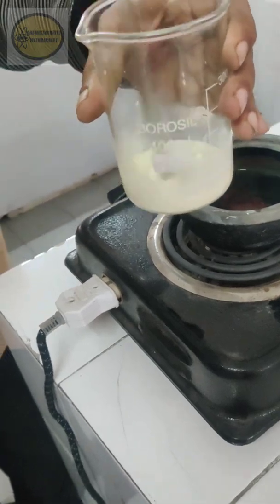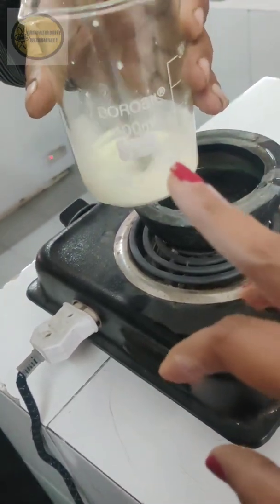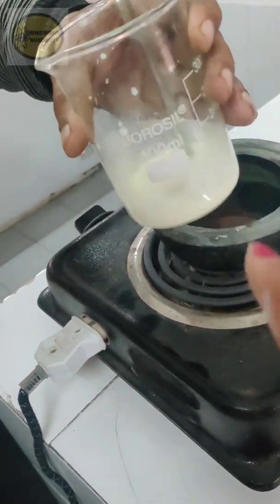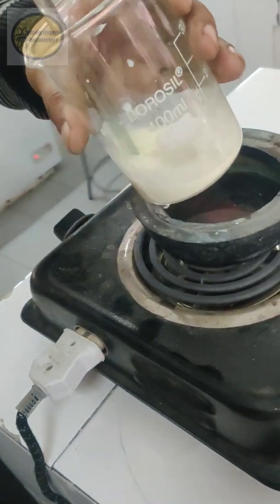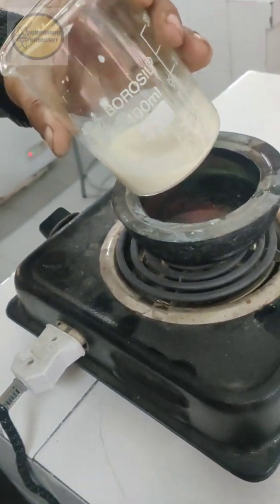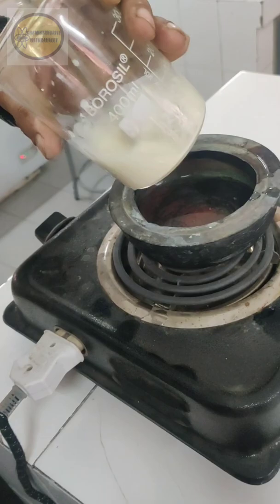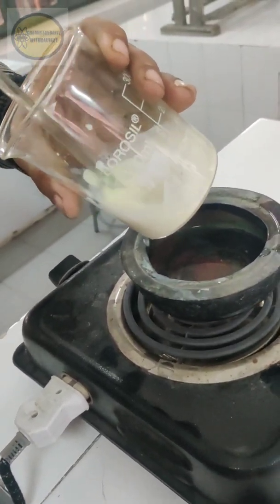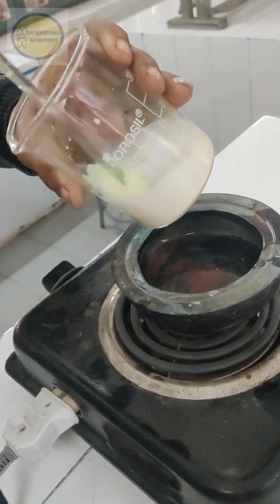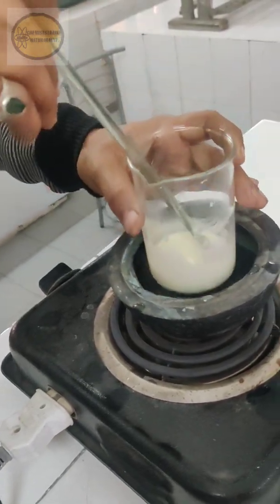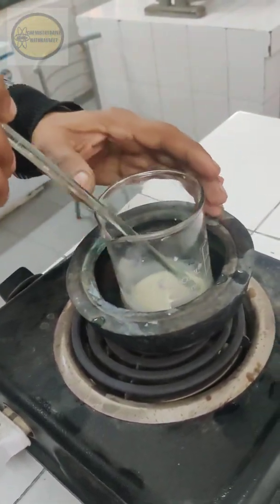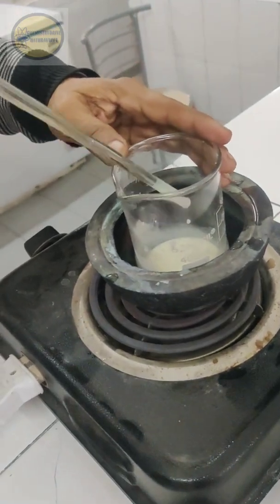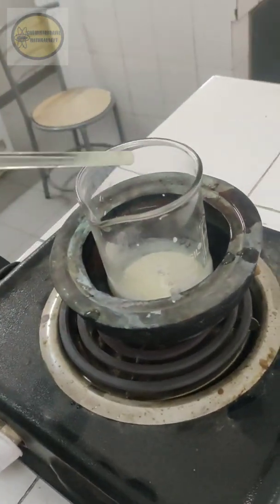Now for recrystallization what we have done is we have mixed our precipitate with the alcohol. So about 10 ml alcohol I have taken depending upon how much para-nitroacetanilide you have obtained. Like if you have obtained about 5 grams so you can put 20 ml of alcohol. So why we are using alcohol because ortho product it is soluble in alcohol so at the end we'll be left only with the para product.